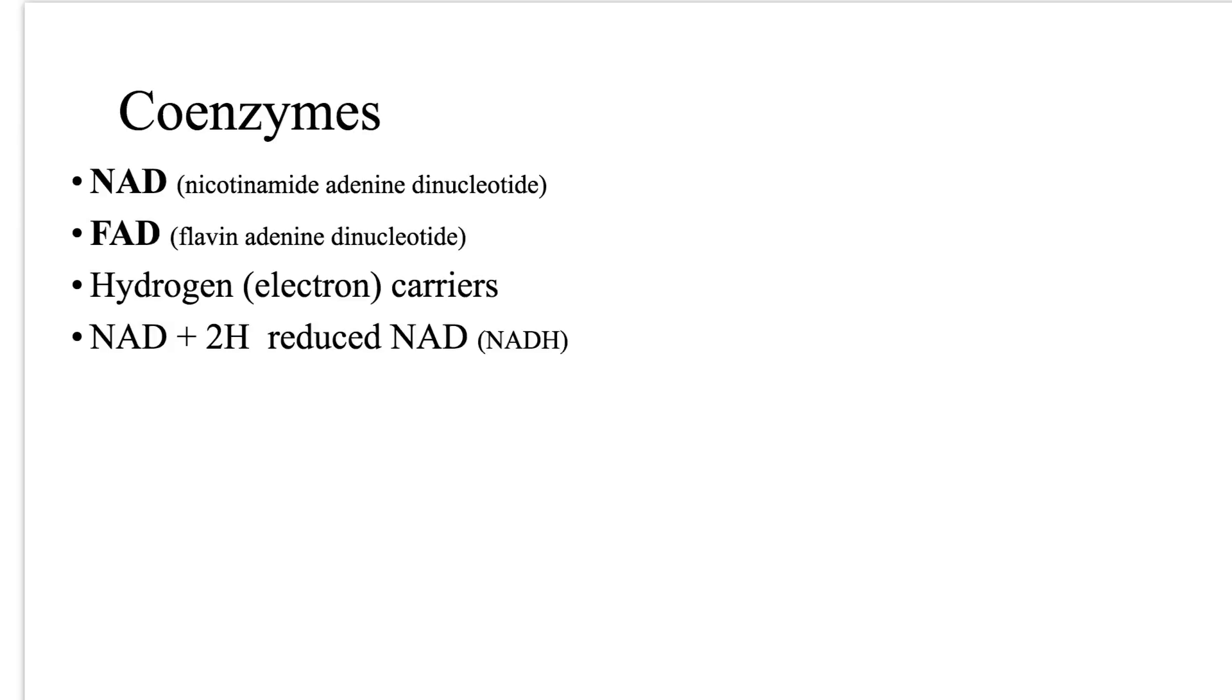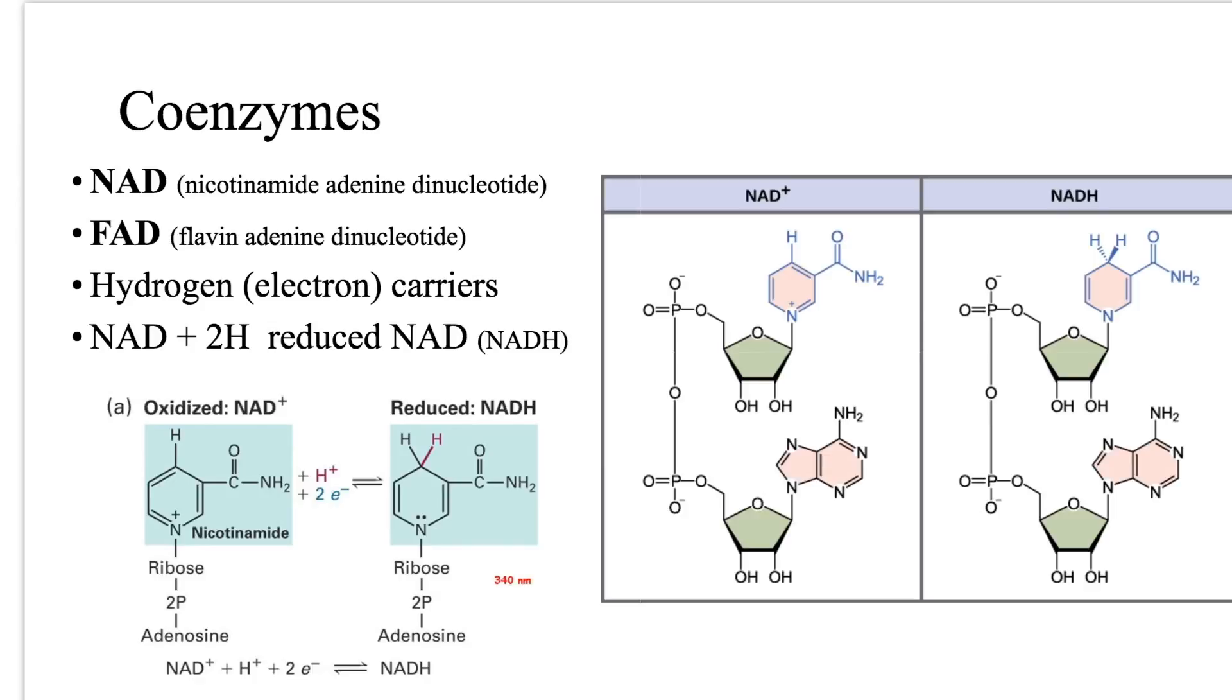NAD is well suited as an electron carrier because it can cycle easily between an oxidized NAD plus form and the reduced NADH state. As an electron acceptor, the NAD plus functions as an oxidizing agent during respiration. Here you can see an oxidized NAD. Well, we just call this NAD.